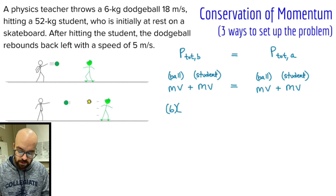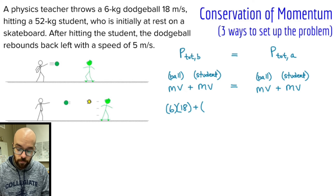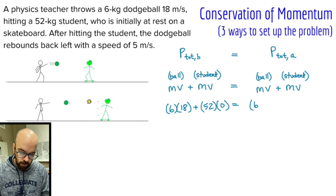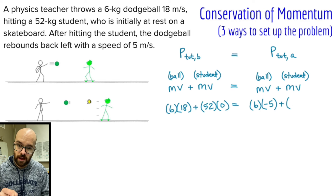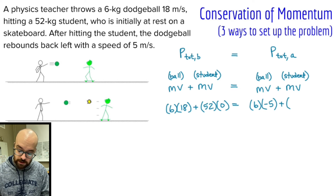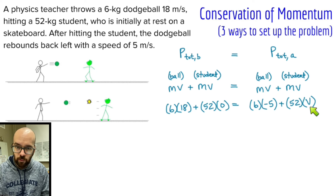Now we substitute in all known values. The mass of the ball is six kilograms, the velocity of the ball before is 18 meters per second. The mass of the student is 52 and the velocity before is zero. That equals the total momentum after: mass of the ball is still six, the velocity of the ball after is negative five — make sure you get that negative, it's really important and easy to forget. Include that negative for anything moving in the negative direction. Plus, the mass of the student is 52, and the velocity of the student we don't know yet — that's our one variable.